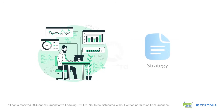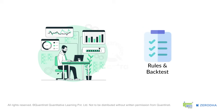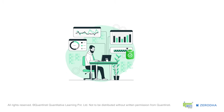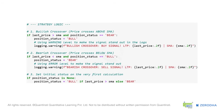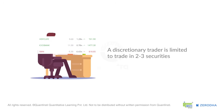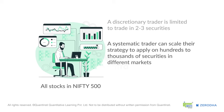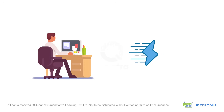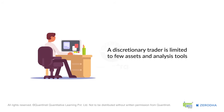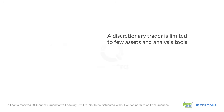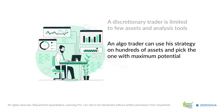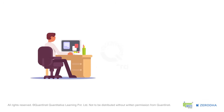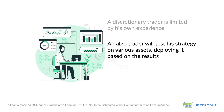In contrast, an algorithmic trader relies on their strategy to make the correct decision. They define trading rules, backtest them, and validate the strategy before converting it into an algorithm using a programming language such as Python. The algorithm handles entry and exit of trades. Humans have limited time and brain power — a discretionary trader is limited to 2 to 3 securities — whereas a systematic trader can scale their strategy to hundreds or thousands of securities in different markets. An algorithmic trader can also test their strategy on various assets and deploy only the ones with maximum potential.